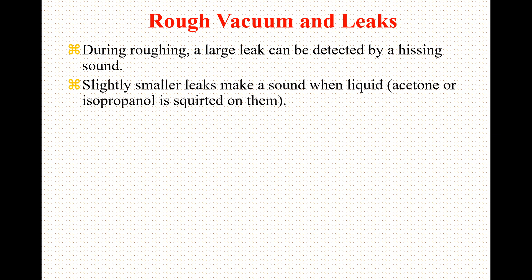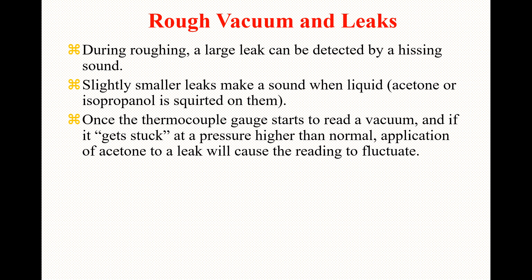If we have a slightly smaller leak, it can be detected when a liquid such as acetone or isopropanol is squirted on it. Once the thermocouples start to read a vacuum and the gauge gets stuck at a higher than normal reading, application of acetone to a leak will cause the reading to fluctuate.